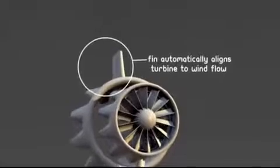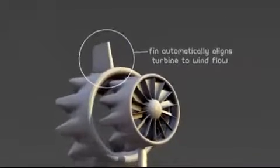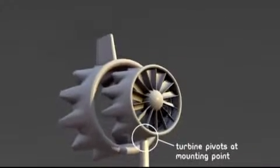Flowdesign's turbine can automatically align to the wind direction, like a kite string, and does not need motorized alignment.